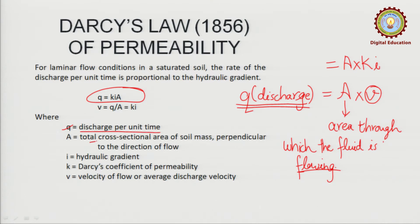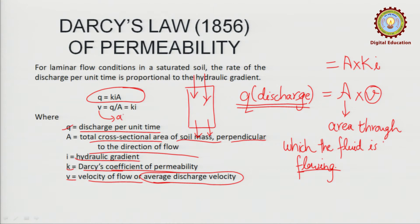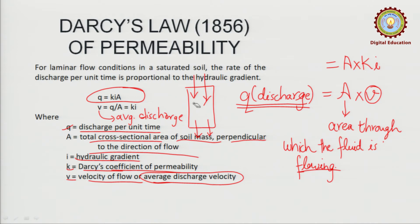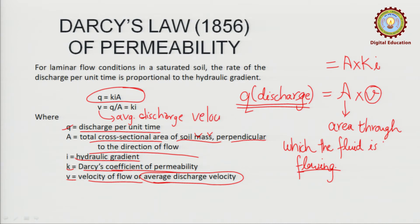This was Darcy's law. Regarding the hydraulic gradient: if a soil sample of length L and cross-sectional area A is subjected to differential head H1 and H2, the hydraulic gradient i = HL / L, or equivalently (H1 − H2) / L. If we find Q, then Q = K × (H1 − H2) / L × A.